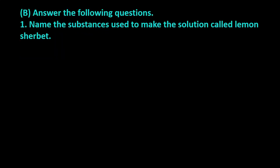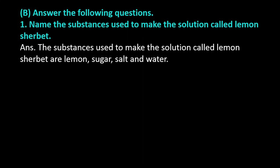Exercise question number B: Answer the following questions. Question number 1: Name the substances used to make the solution called lemon sherbet. Answer: The substances used to make the solution called lemon sherbet are lemon, sugar, salt, and water.